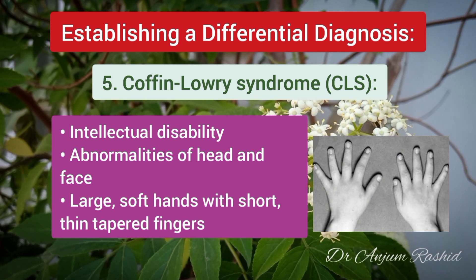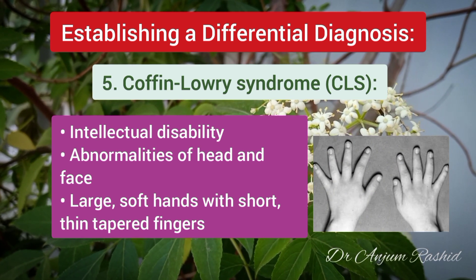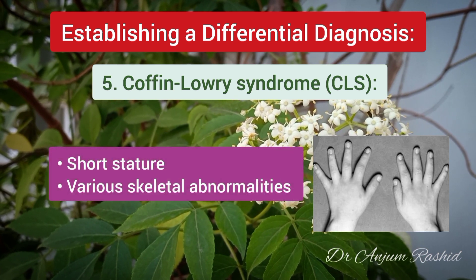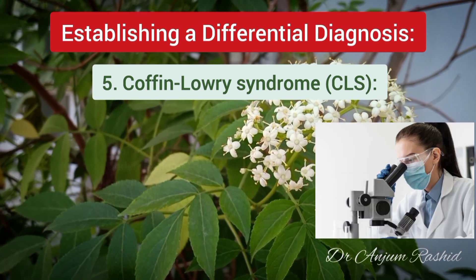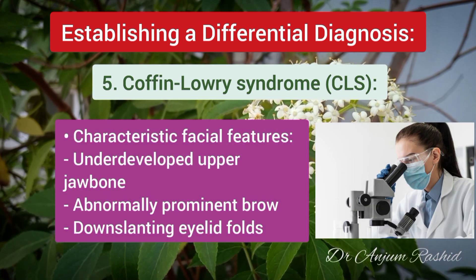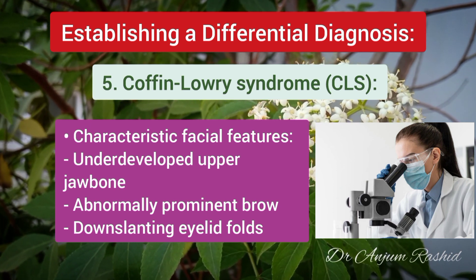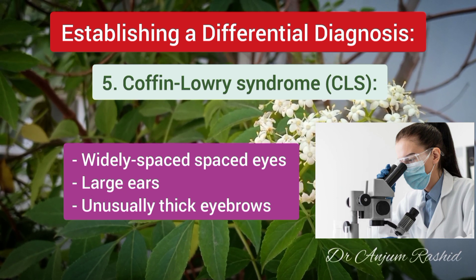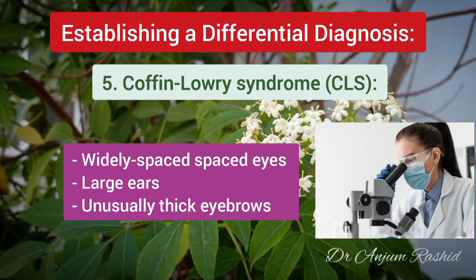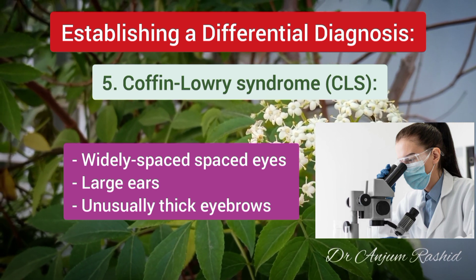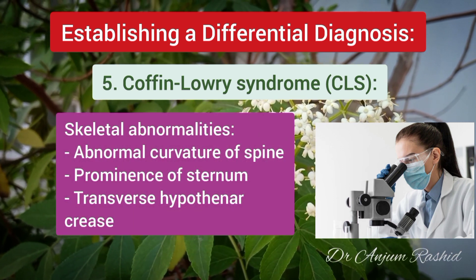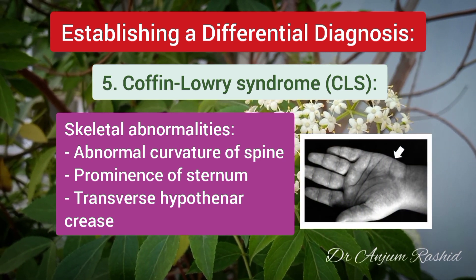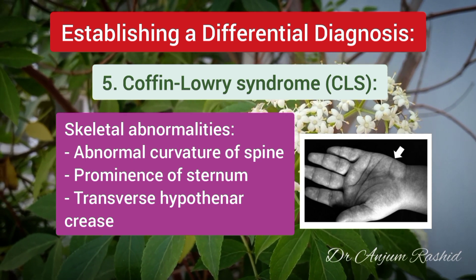Coffin-Lowry syndrome is a rare genetic disorder characterized by intellectual disability, abnormalities of the head and facial area, large soft hands with short thin tapered fingers, short stature, and various skeletal abnormalities. Characteristic facial features may include maxillary hypoplasia, an abnormally prominent brow, down-slanting palpebral fissures, widely spaced eyes, large ears, and unusually thick eyebrows. Skeletal abnormalities may include kyphoscoliosis and unusual prominence of the sternum, known as pectus carinatum.